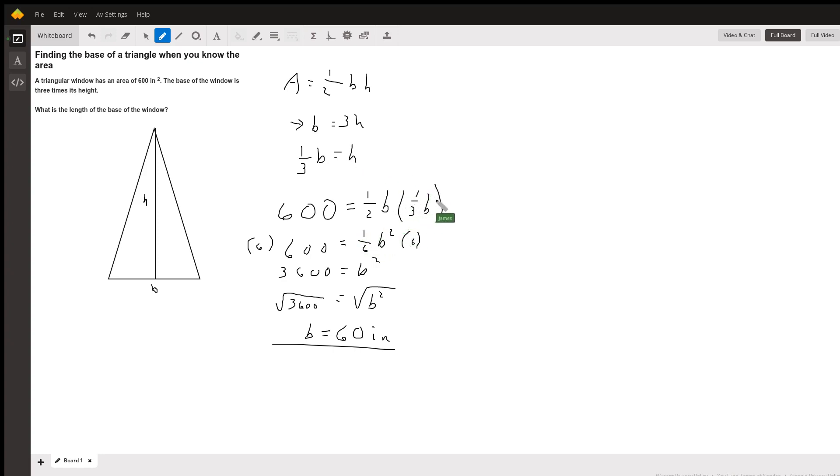I substitute that in for height in my area formula. I get 600 equals one-half B times one-third B. Multiply them together, I get 600 equals one-sixth B squared.